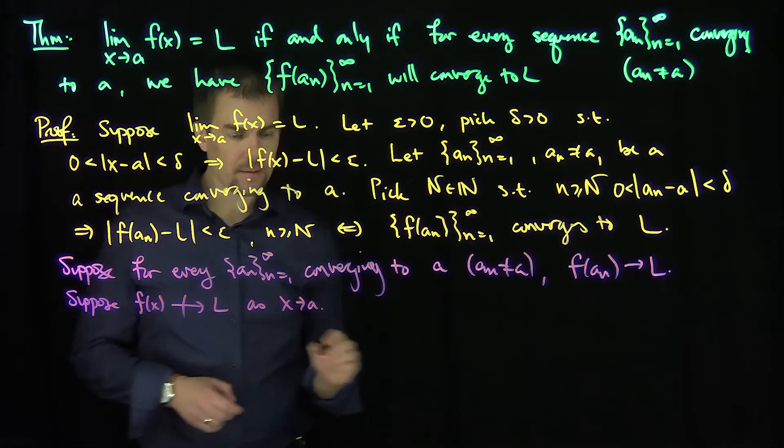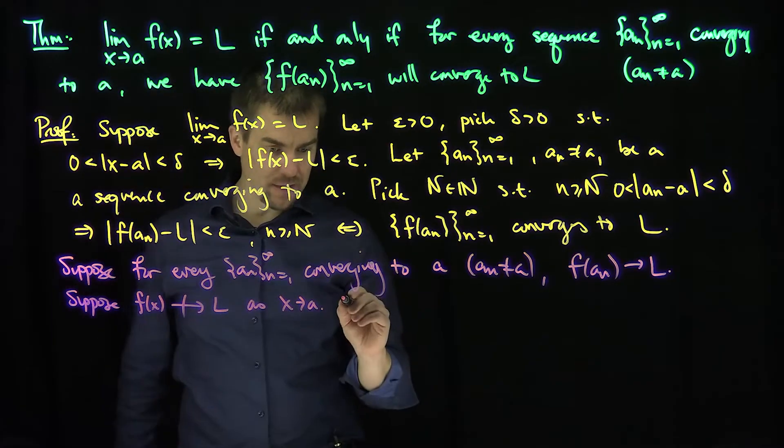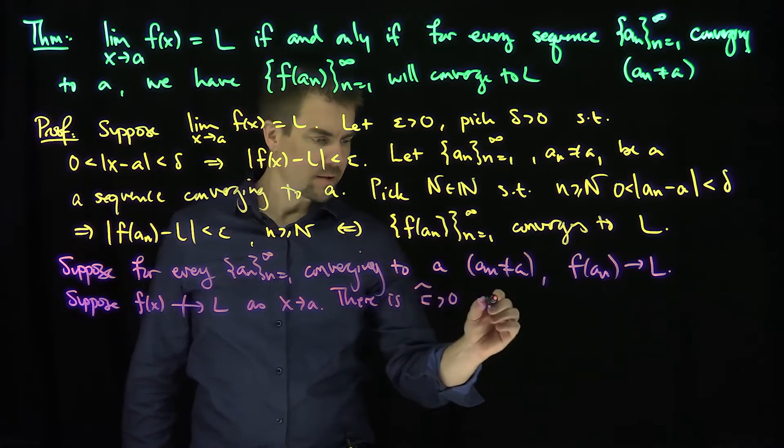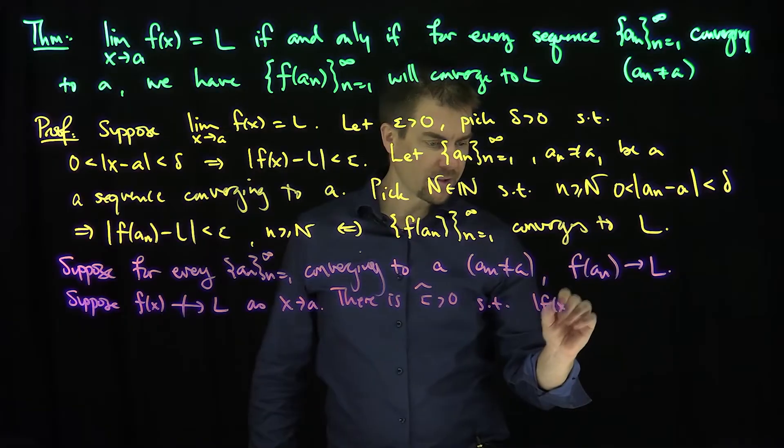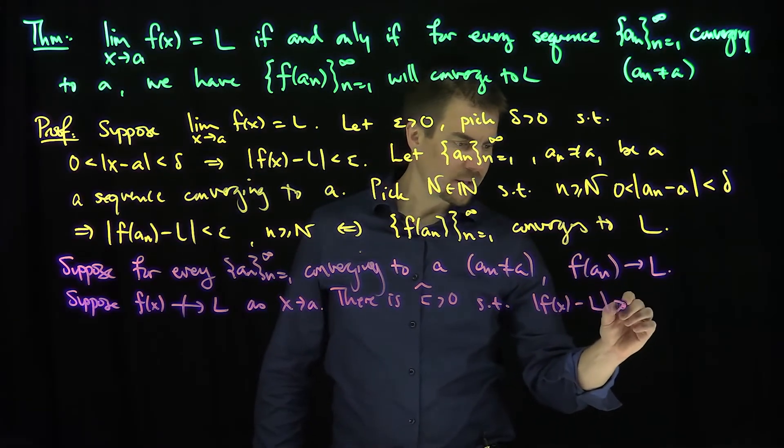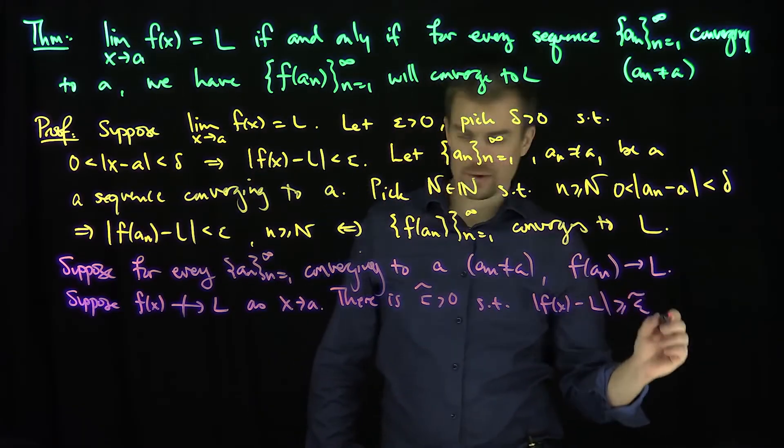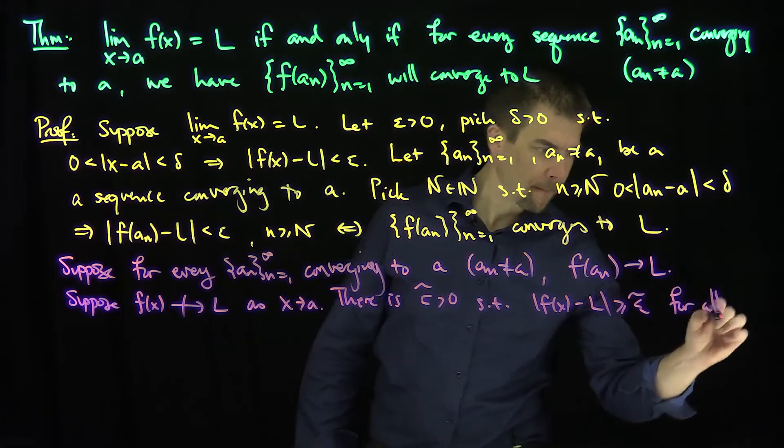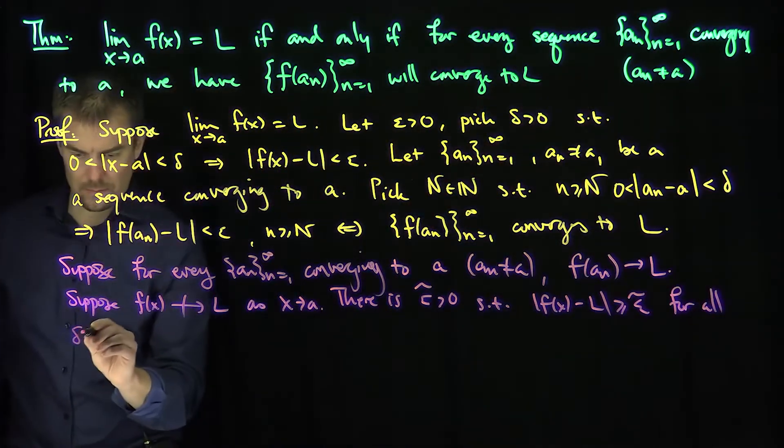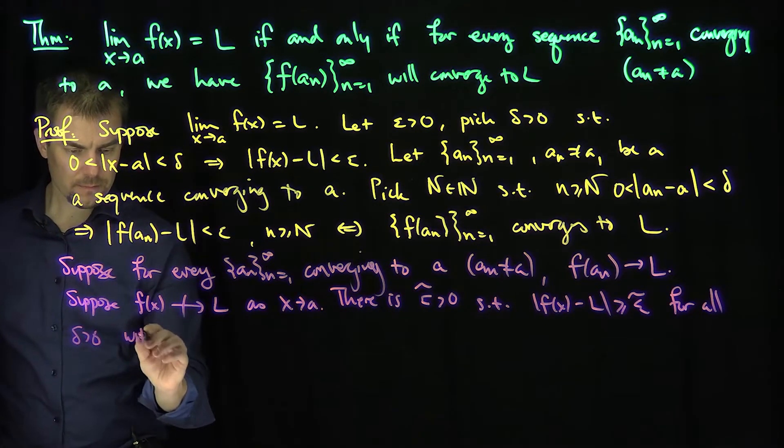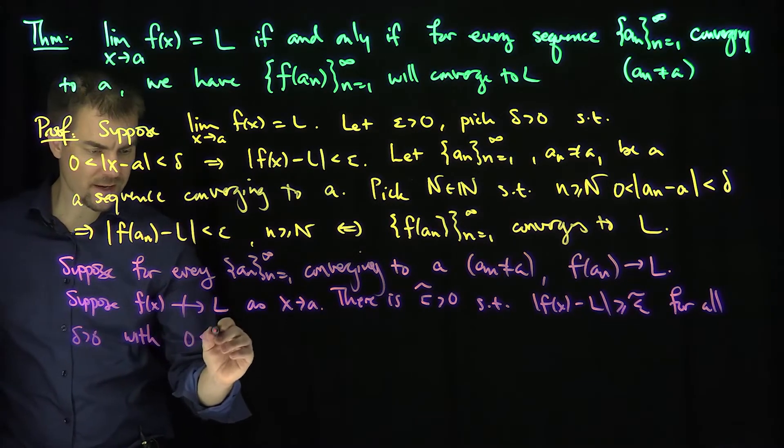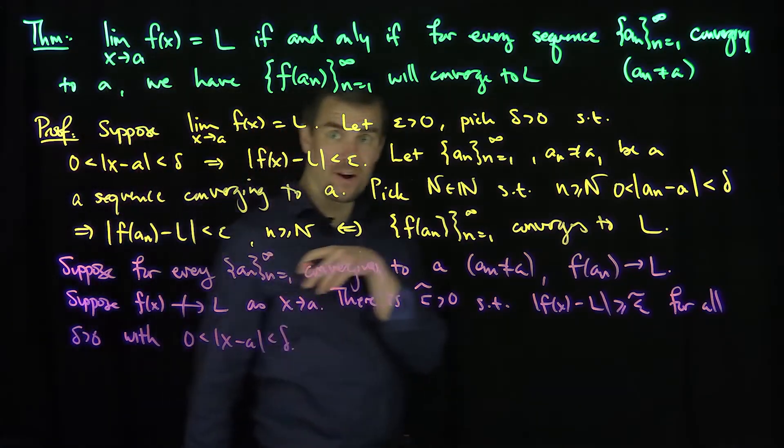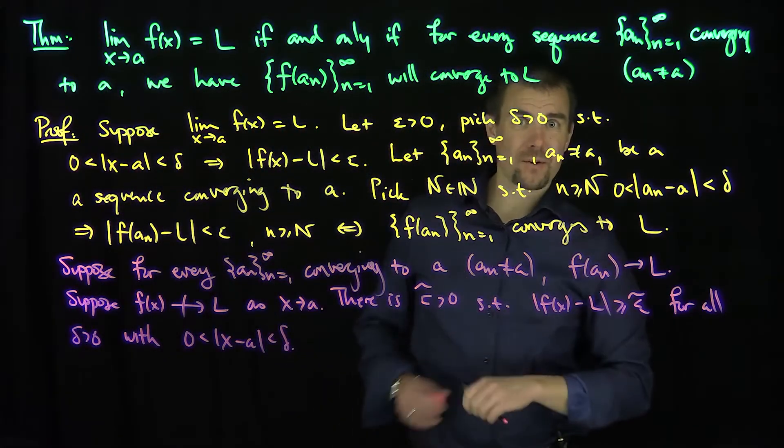Now, what does that mean? That means there is an epsilon tilde. There is epsilon tilde greater than zero, such that |f(x) - L| is bigger than or equal to epsilon tilde, no matter for every delta, for all delta greater than zero, with zero less than |x - a| less than delta. So in other words, for every delta I want, I will always have this inequality. So in particular,